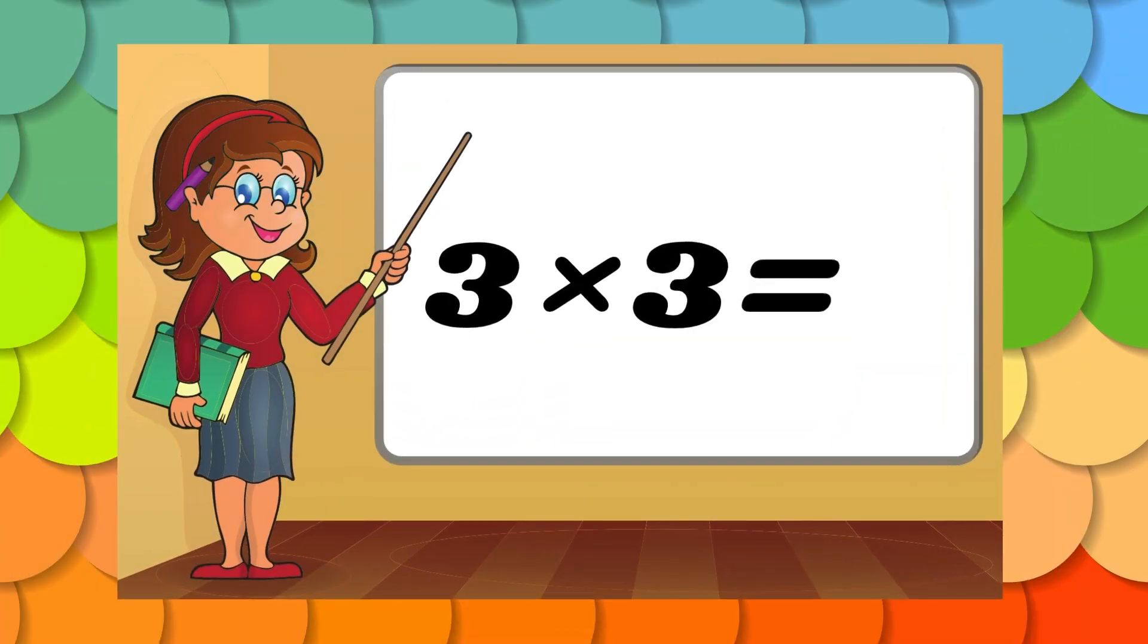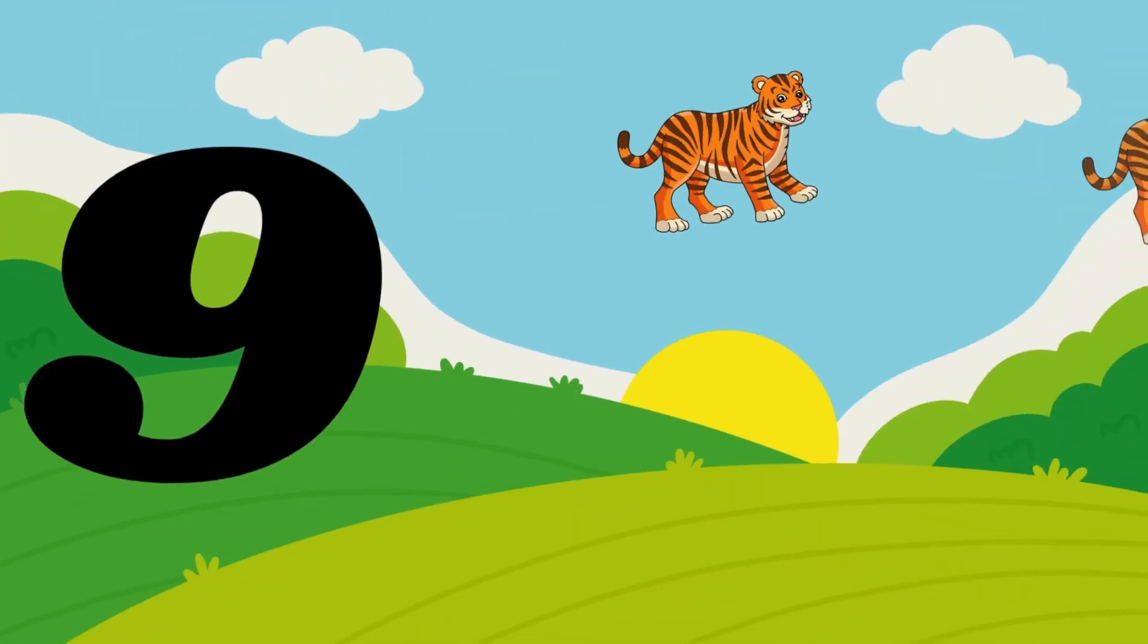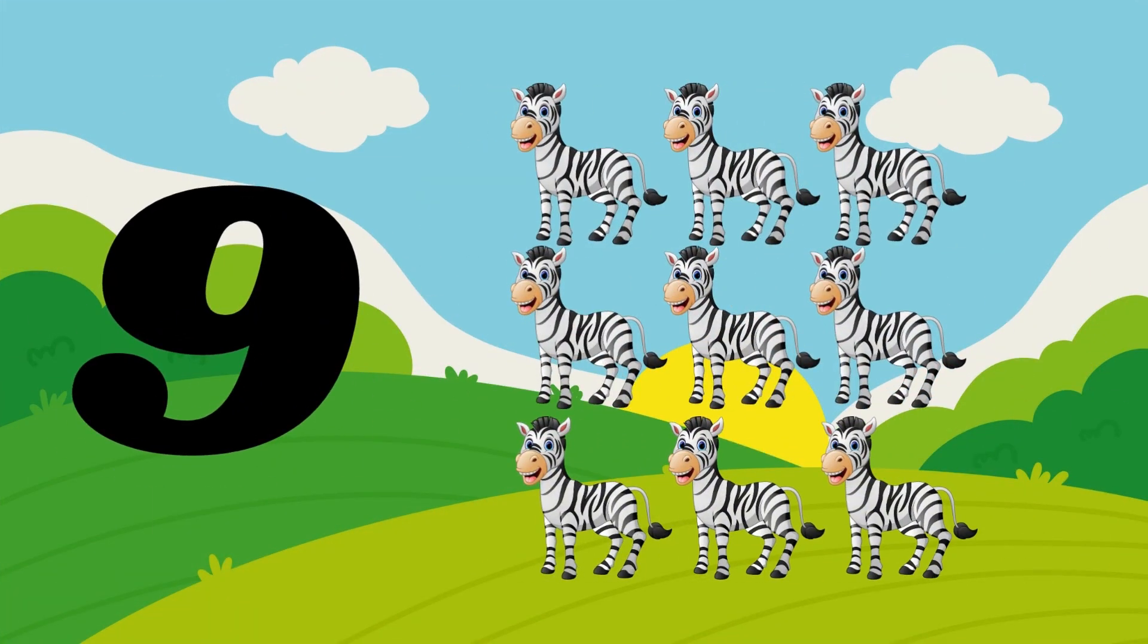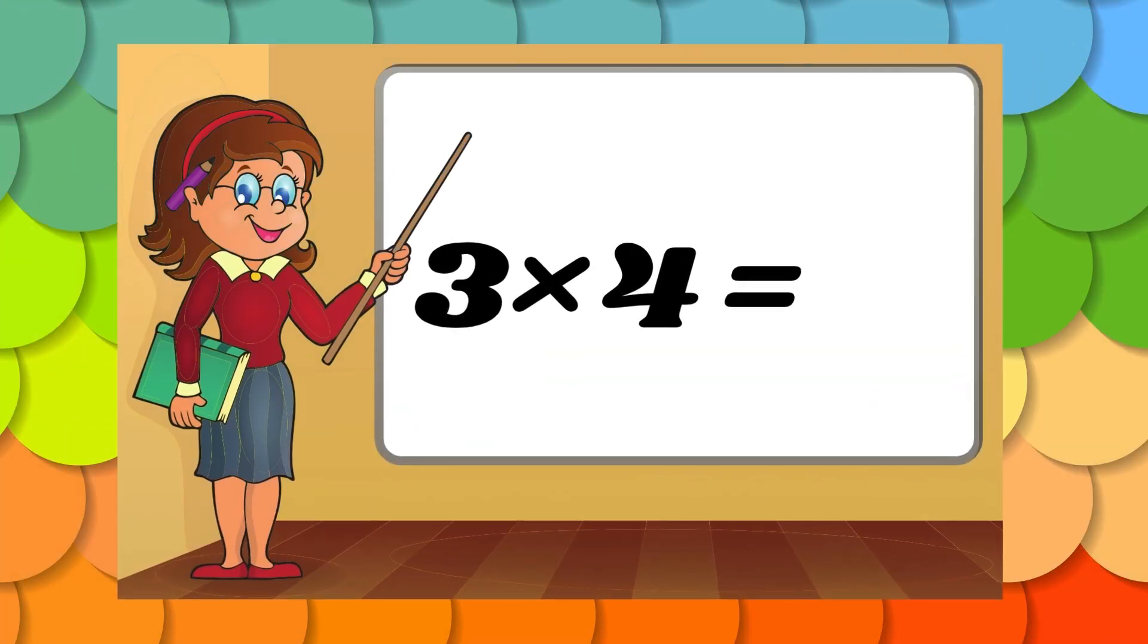Three threes are nine. Three threes are nine. Nine tigers, nine zebras. Three fours are twelve. Three fours are twelve.